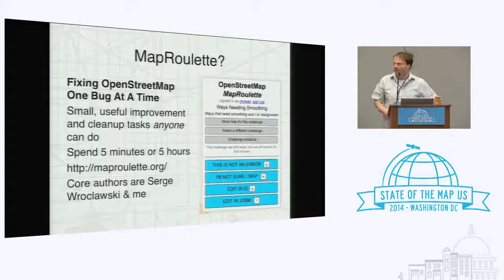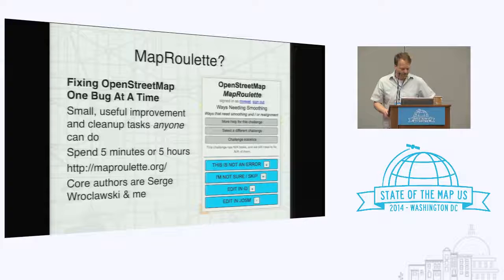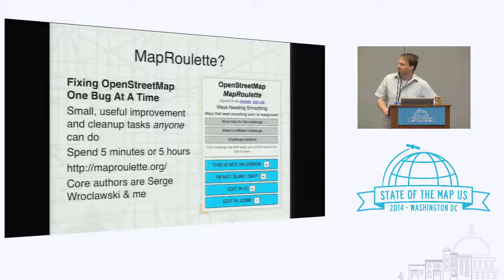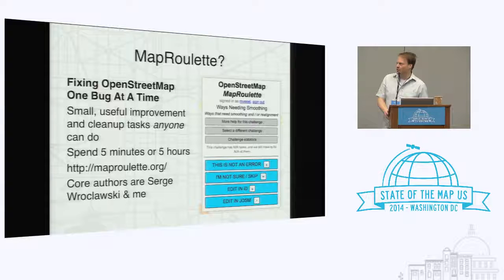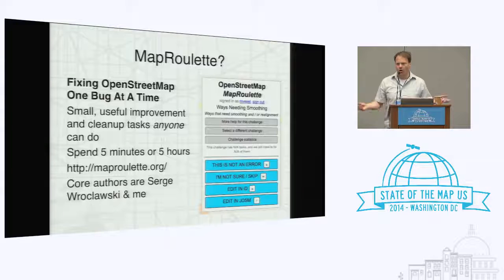I was considering doing a live demo, but I'm not going to do that because of past experience. So, OpenStreetMap in a few non-bullet points: it's basically fixing OpenStreetMap one bug at a time. It's designed to serve up small, useful improvement and cleanup tasks that anyone can basically do.